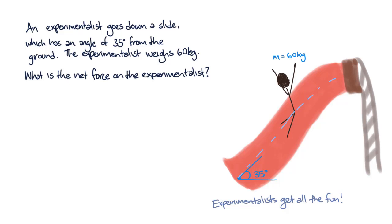So we know that from a stationary start, the experimentalist will slide down the slide. So we can already infer that the net force will point down the slide. But how?